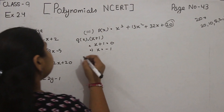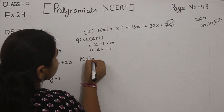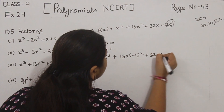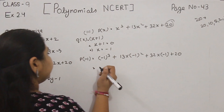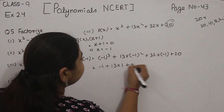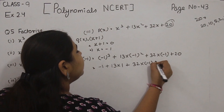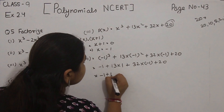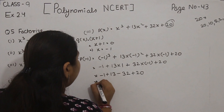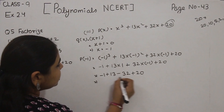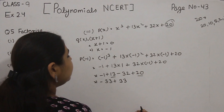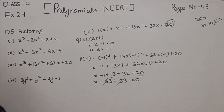This is not a confirmed factor yet — first we will put it into P(x). So P(-1) = (-1)³ + 13(-1)² + 32(-1) + 20 = -1 + 13 - 32 + 20. Now -1 and -32 is -33, and +20 and +13 is +33. Plus and minus cancel, we get 0. So this is the confirmed factor.